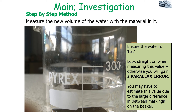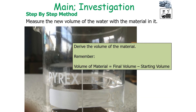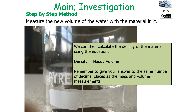One issue with the investigation is that if you're not using a measuring cylinder and you're using a beaker, you may have to estimate this value due to the large differences between markings — the beaker has a low resolution. To derive the volume of material, volume of material equals the final volume minus the starting volume. Then you can calculate density using density equals mass over volume.